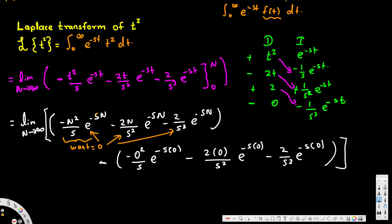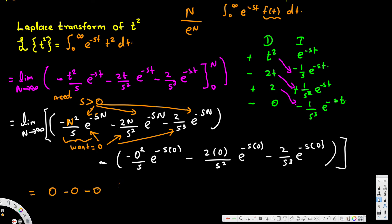For the upper limit terms to go to zero, s must be positive. Even though we have factors of n, e to the power of n grows faster than any polynomial in n as n approaches infinity. So e to the negative infinity makes all those terms zero, provided s is greater than zero. All three upper limit terms — the n squared term, the 2n term, and the constant term — go to zero when s is positive.